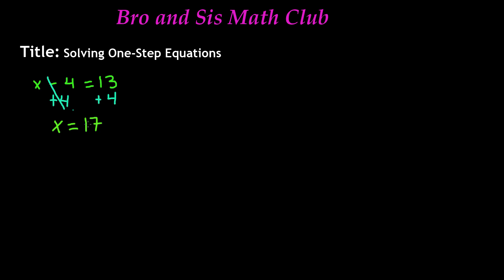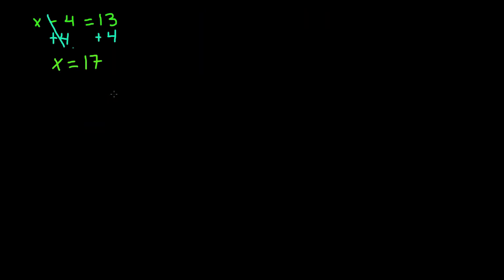I can always check my answer by substituting my value into my variable in my original equation and seeing if the answer is correct. I know that x is equal to 17, so if I do 17 minus 4, I get 13. Therefore, my answer is correct. Now let's go ahead and do another example.